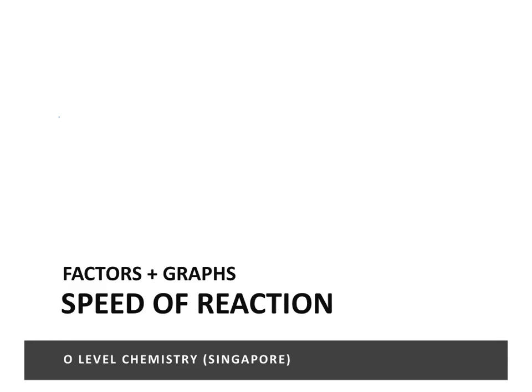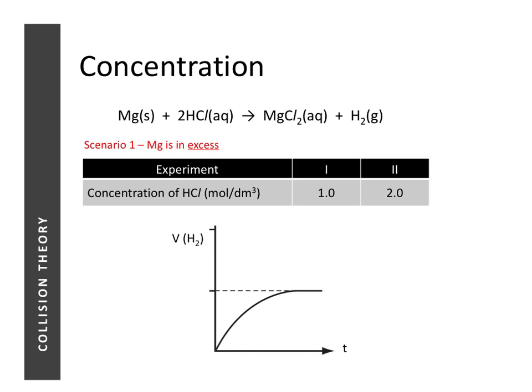In the last lesson we looked at how five different factors affect the speed of reaction. In this lesson we're going to look at how each factor can affect the shape of the graph produced.